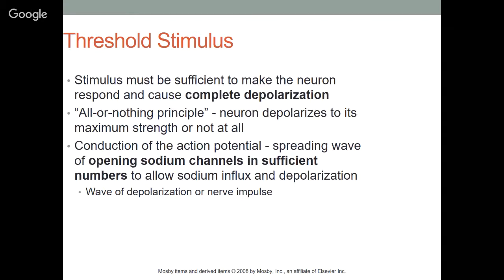There is a threshold stimulus — the stimulus must be sufficient to make the neuron respond and cause complete depolarization. Using the bouncer analogy, the stimulus must be strong enough to distract the bouncer. Once distracted, it's all or nothing — the sodium channels fully open and you get maximum sodium influx. The neuron depolarizes to its maximum strength or not at all. Conduction of the action potential is a spreading wave of opening sodium channels along the cell membrane.